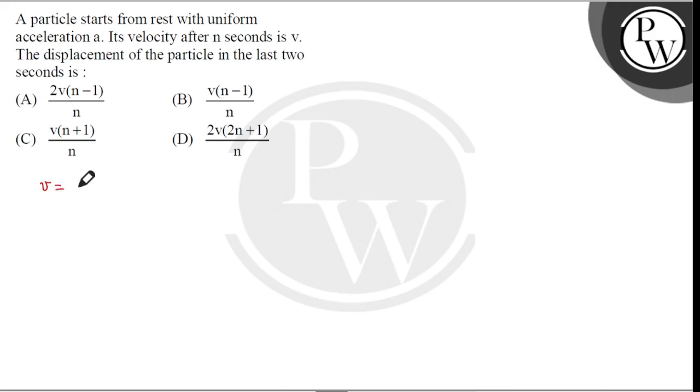So v equals a times n. And before two seconds, the velocity will be v dash is equal to zero plus a into n minus 2.